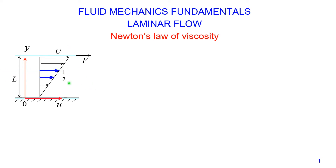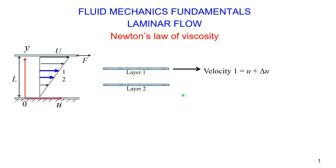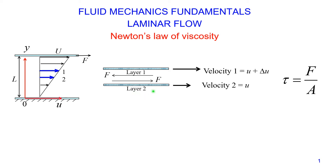Let's consider two layers — layer 1 and layer 2. They are adjoining layers, although for clarity I show them slightly separated. Layer 1 tends to move faster and tends to speed up layer 2 by means of a force F that acts on layer 2. At the same time, layer 2 tends to slow down layer 1 by means of the same force, equal in magnitude but opposite in direction, as per Newton's third law. Therefore, if the force F acts over an area of contact A, the shear stress is given by the ratio of this force divided by the area of contact A.